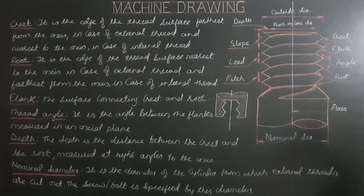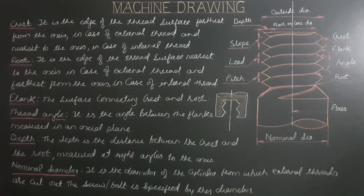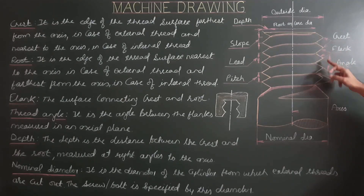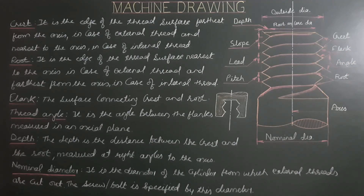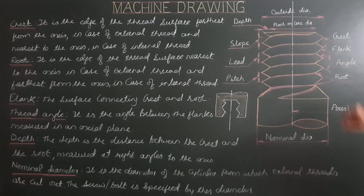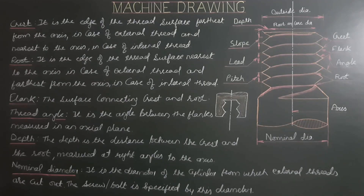Various parts of a screw thread are: crest, flank, angle of thread, root, axis of screw, nominal diameter, lead, slope, depth, outside diameter, and root or core diameter.